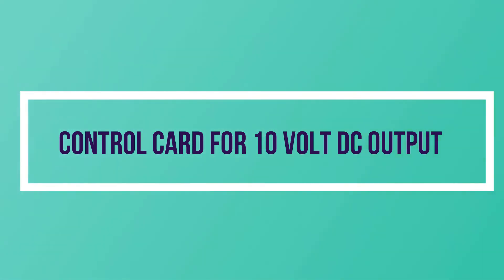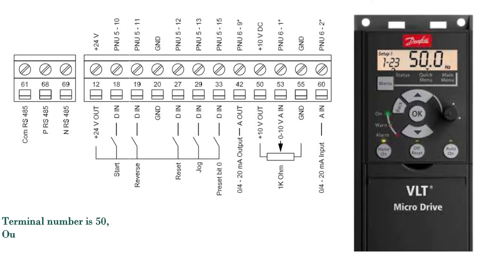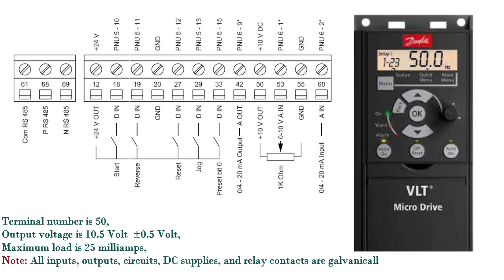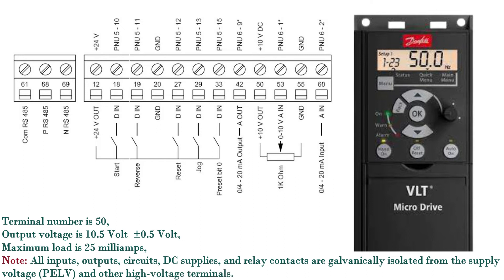Control card for 10 volt DC output: terminal number is 50; output voltage is 10.5 volt ±0.5 volt; maximum load is 25 milliamps. Note: all inputs, outputs, circuits, DC supplies and relay contacts are galvanically isolated from the supply voltage (PELV) and other high voltage terminals.